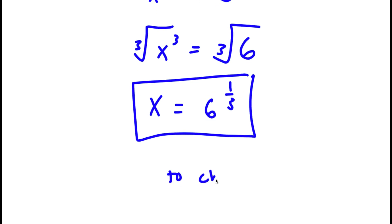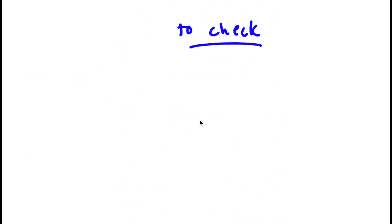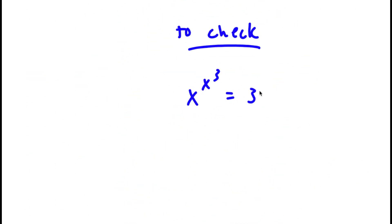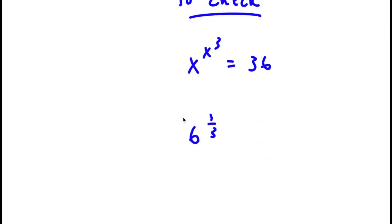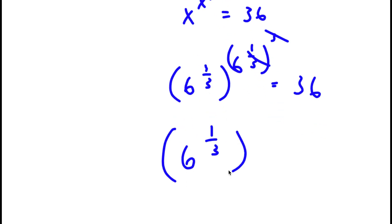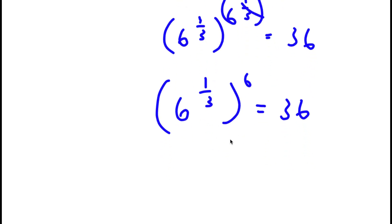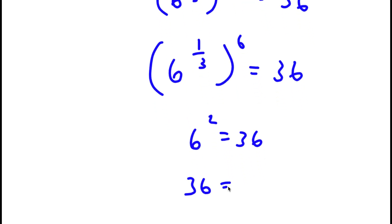To check: x to the power of x to the power of 3 equals 36, and we know x equals 6 to the power of 1 third. So I have 6 to the power of 1 third, to the power of 6 to the power of 1 third to the power of 3, is equal to 36. The 1 third and 3 cancel out, leaving 6 to the power of 1 third to the power of 6. Then 1 third times 6 is 2, so I have 6 to the power of 2, which equals 36. So 36 equals 36.